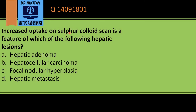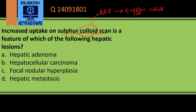Sulfur colloid scan, or colloid scintigraphy — this colloid is taken up by the reticuloendothelial system of the body, that is liver, spleen, and bone marrow. In the liver, these cells are the Kupffer cells. So any liver lesion which contains a good amount of Kupffer cells will show uptake on this colloid scintigraphy.